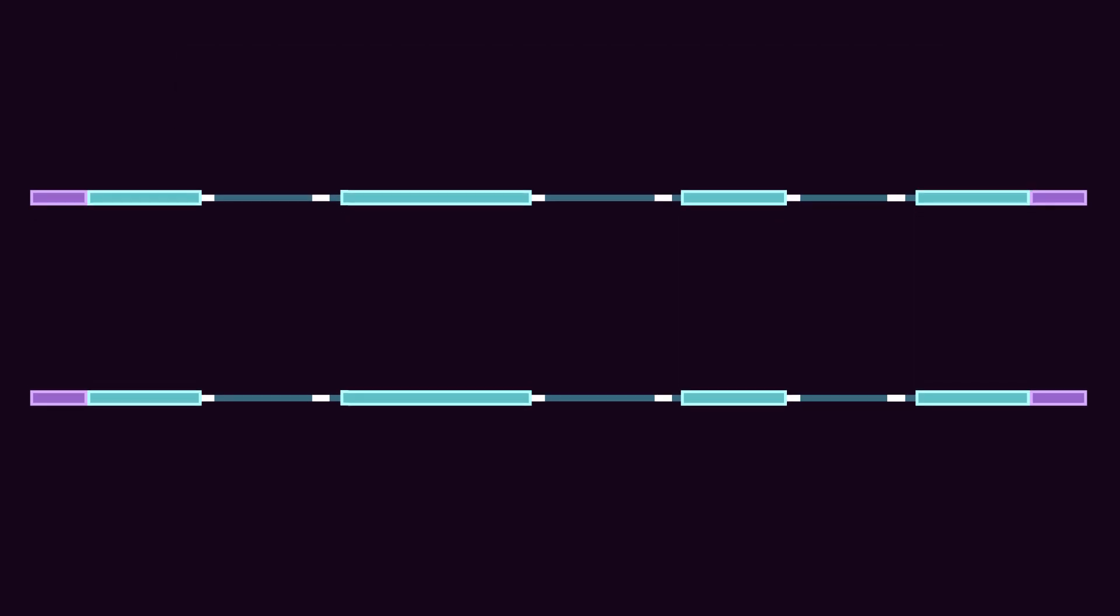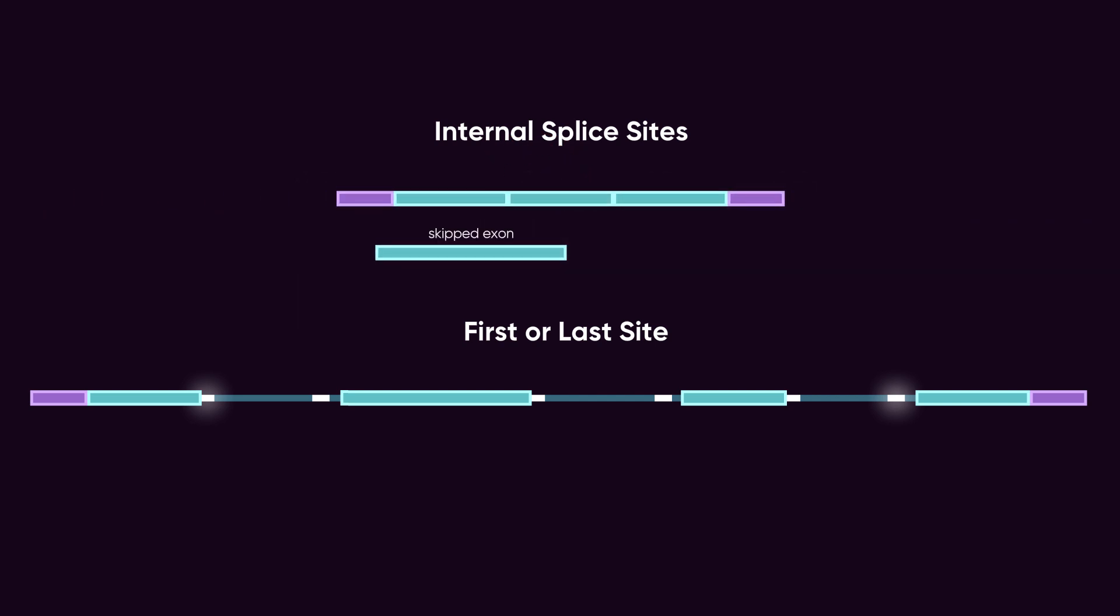We'll divide splice sites into two groups, internal splice sites and the first or last splice site, because blocking either of these groups usually leads to different outcomes. Blocking an internal splice site usually causes exon skipping, while blocking the first or last splice site typically causes intron inclusion.